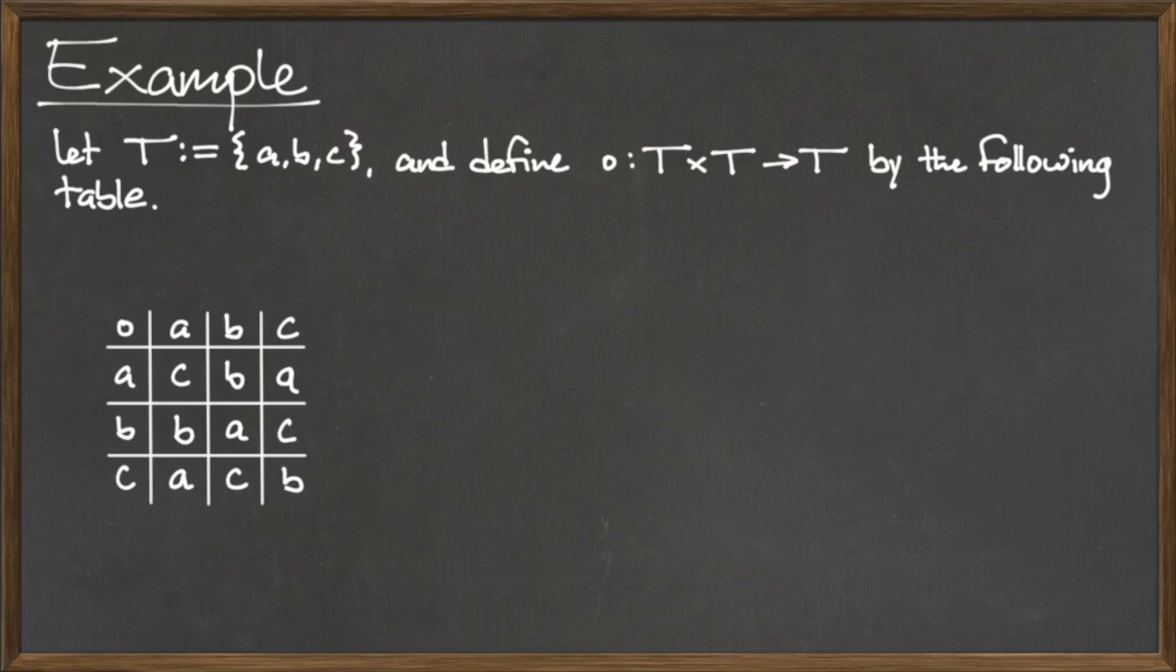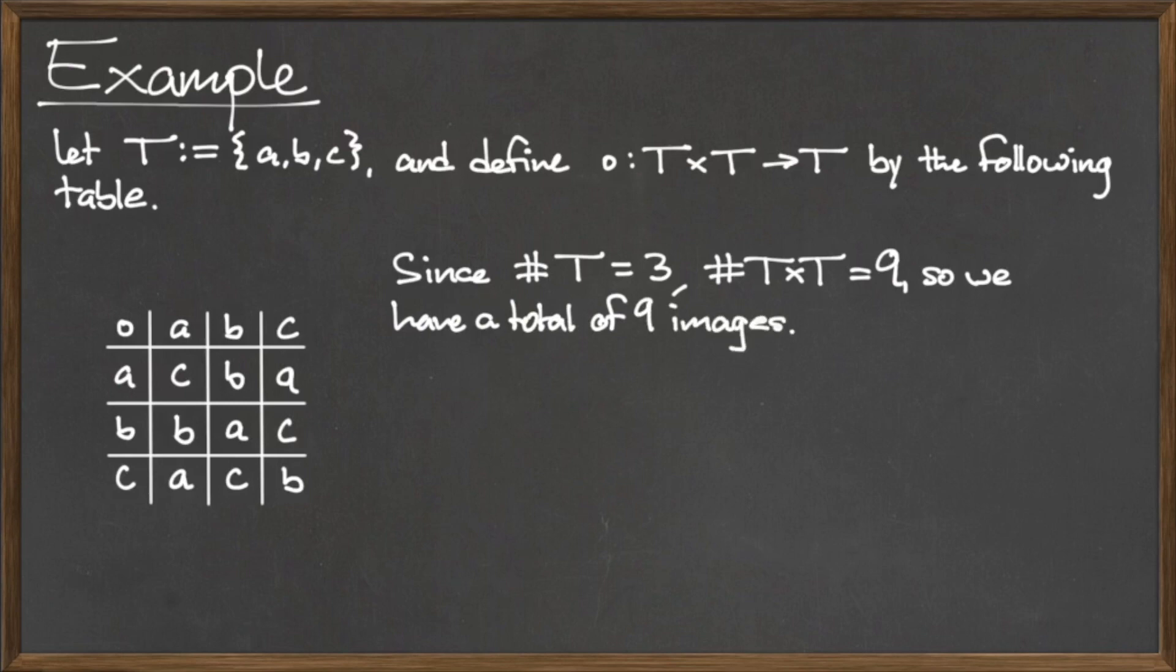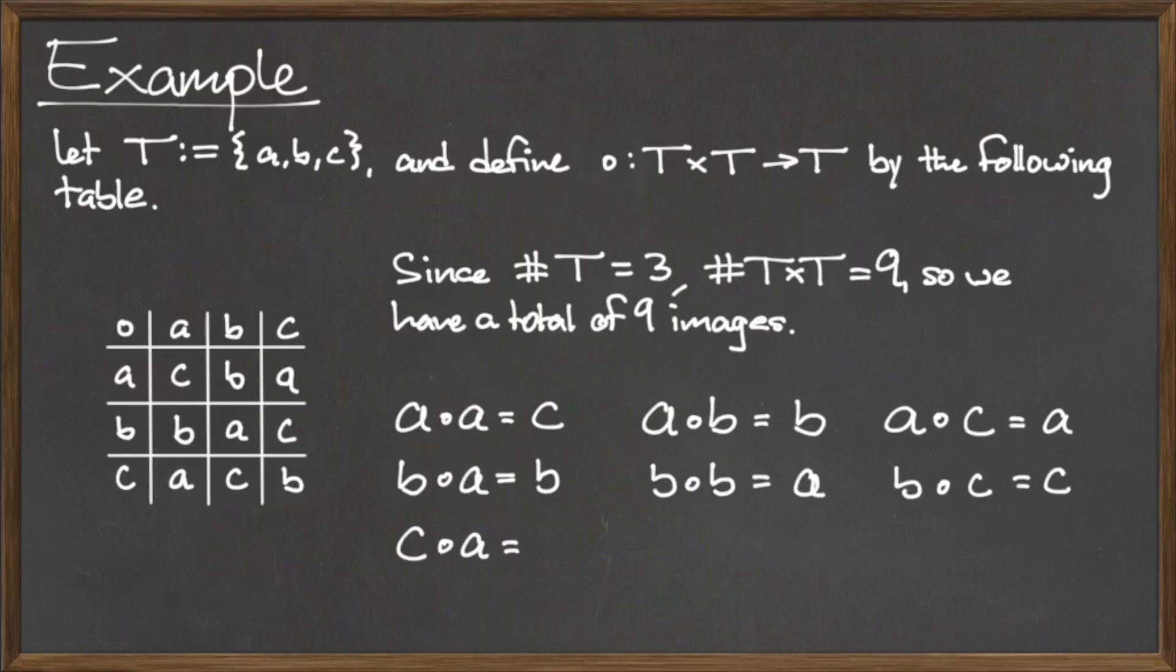We don't actually have a formula for what · does, but from the table we can discern its behavior. Since T contains 3 elements, the cardinality of T is 3. Therefore, we know that the cardinality of the cross product T × T will be 9, so there will be a total of 9 images in the table. Again, reading from row to column and applying the binary operation ·, we can fill in the following images like so.